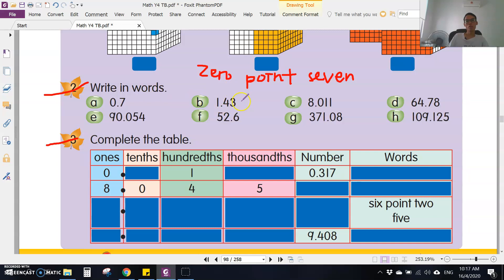Part b: 1.43, you write one point four three. Then c: 8.011, you write eight point zero one one. You mention the numbers one by one. You don't write eleven here. You just write 8.011. That is something different for decimals.